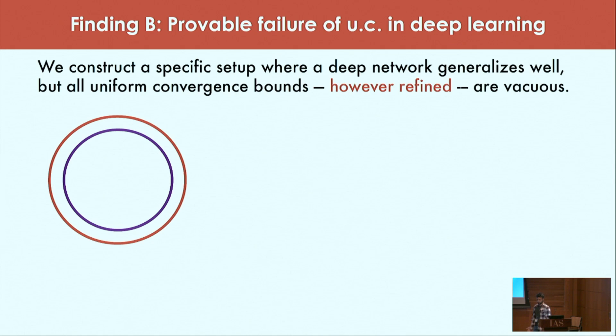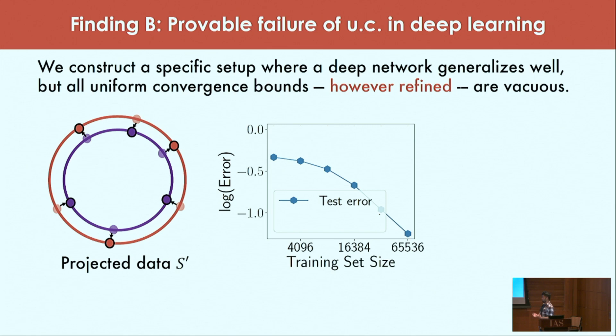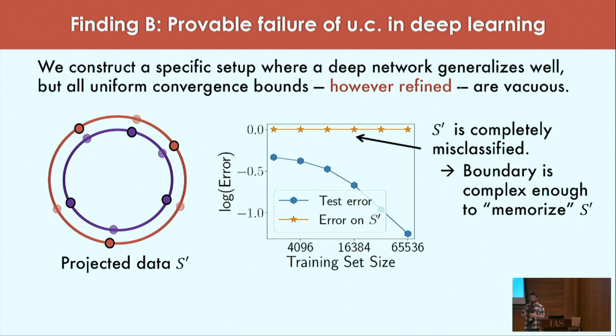Let me quickly summarize the setup. You have two hyperspheres in thousand dimensions and you want to classify them. First, the test error does improve with the training set size and decreases to smaller quantities. At the same time to show that uniform convergence fails, we'll take each point in the training set and project it onto the opposite hypersphere. Let's call this data set S prime. First we observe that S prime is completely misclassified by the network even though on random test data sets it performs very well. Intuitively, the network performs really well on the training set but has somehow memorized the locations of the training data set in a way that it misclassifies S prime which is just as large as the training set.